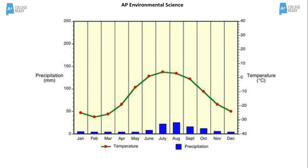This is a climate diagram, also called a climatogram, that is typical of the tundra. The months are along the bottom axis. The precipitation in millimeters is on the left axis. The temperature in degrees Celsius is on the right axis. The green line shows temperature variations for the year. The blue bars show precipitation.